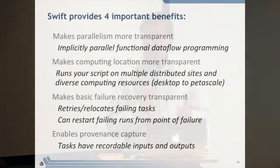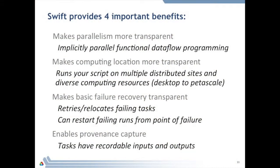Swift does four important things. First and foremost, it determines when things in your workflow can be parallelized—you don't have to explicitly do message passing or use mutual exclusion primitives like you do in MPI or OpenMP to coordinate your parallelization. Everything is done by data flow. What Swift is really doing is taking the data flow concept, which has been coming in and out of vogue in computer science since the mid-1970s, and using that concept to make a transparent, practical approach to parallel scripting of applications.